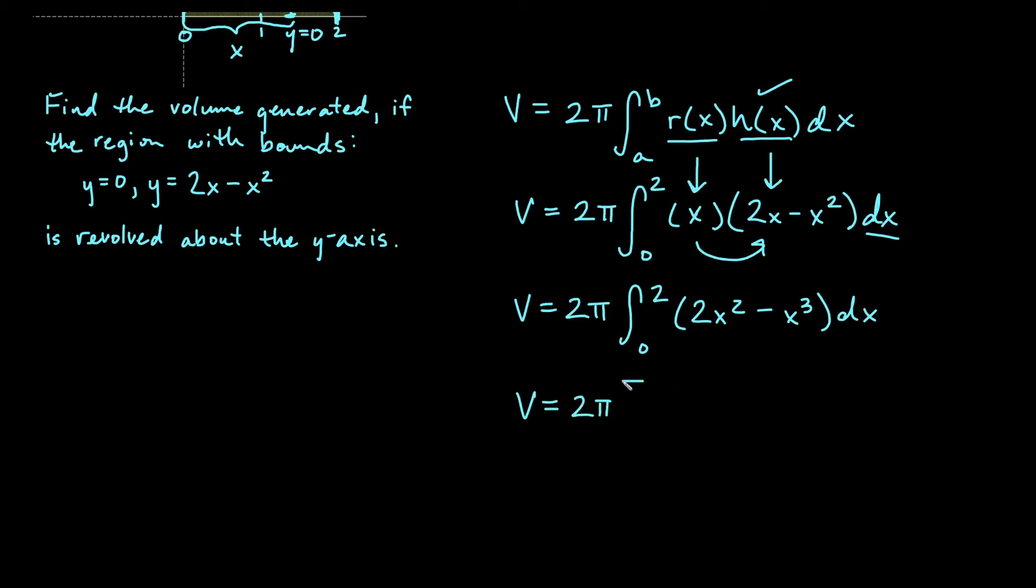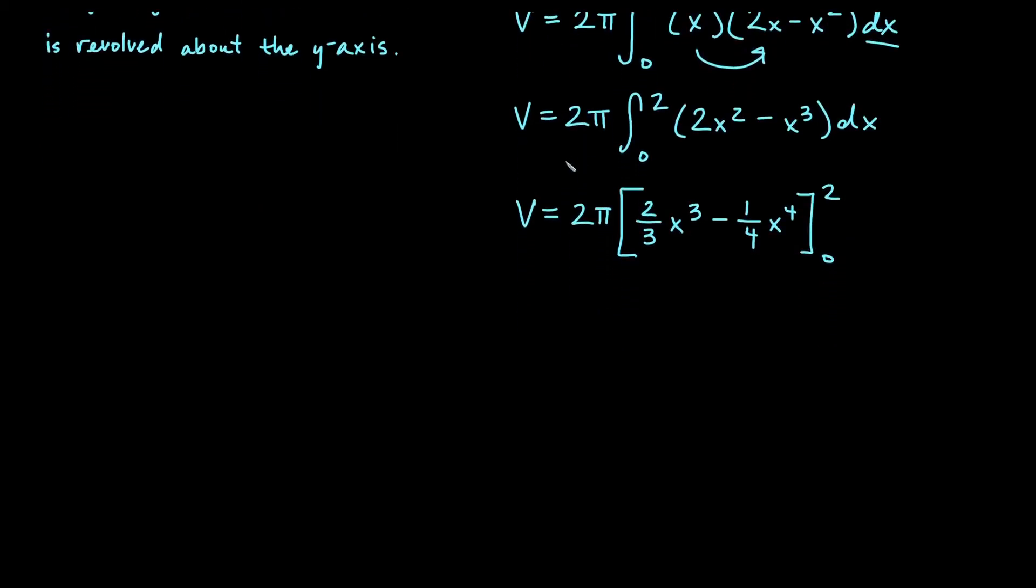So 2π, completing the integral, we will get x cubed over 3. We already have a 2, so that'll become 2 thirds x cubed minus power rule here. We get x to the 4 over 4, 1 fourth x to the 4. And then we will be plugging in 0 and 2 as our bounds.